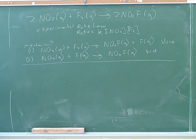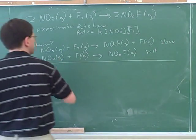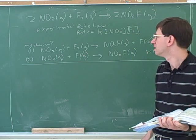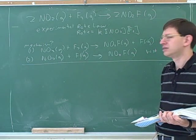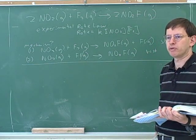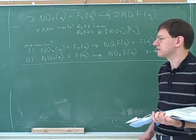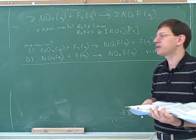Really, only the slow one if this is the only problem, right? We've been practicing finding out all the rate expressions for practice. But if the only question is whether this mechanism works, we don't care about how fast the adult can go. We only care about how fast the toddler can go. Well, what would be the rate expression for this slow step? K concentration of NO2 times concentration of F2. Does that match what we wanted? So does it look like this is a plausible mechanism? Yes.